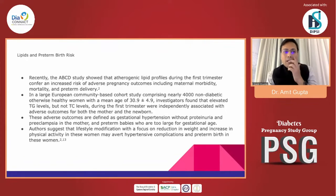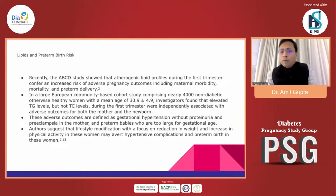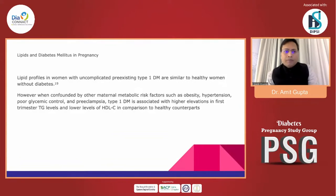Multiparous women tend to have a relative decrease in HDL cholesterol compared to primiparous counterparts. These derangements — elevated LDL with lower HDL — are more pronounced in women with gestational hypertension, diabetes, and preeclampsia. Women with higher concentrations of small dense LDL fractions during pregnancy tend to have increased cardiovascular disease risk later in life. The ABCD study showed atherogenic lipid profiles in the first trimester increase the risk of adverse pregnancy outcomes, including maternal morbidity, mortality, and pre-term delivery. A European cohort study of nearly 4,000 non-diabetic healthy women found elevated triglyceride levels — but not total cholesterol — in the first trimester were independently associated with adverse outcomes including gestational hypertension, preeclampsia, and pre-term or large-for-gestational-age babies.